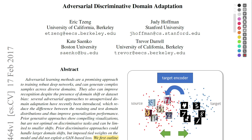Hi everyone, this is YML and today we are going to talk about the Adversarial Discriminative Domain Adaptation paper by Eric Cheng et al. from University of California, Berkeley, Stanford University, and Boston University. This video is from the Paper Explained series and I hope that you will enjoy it.